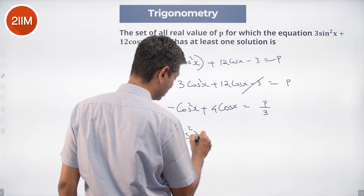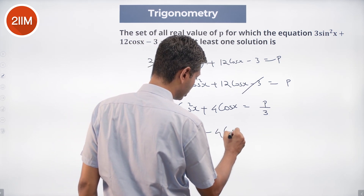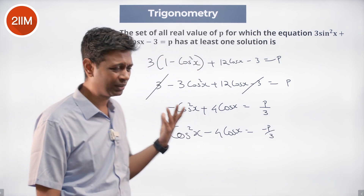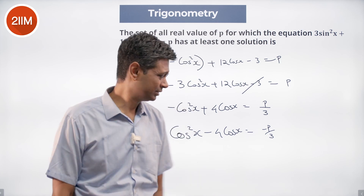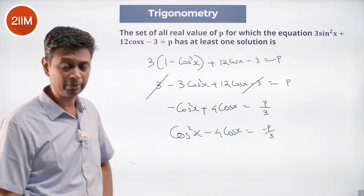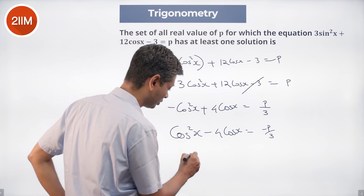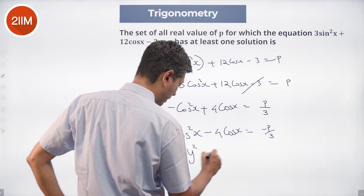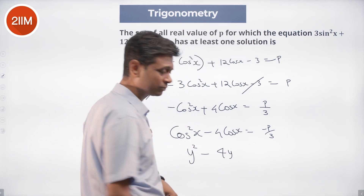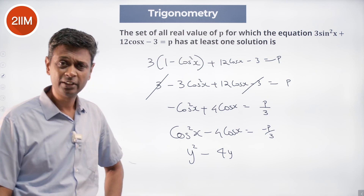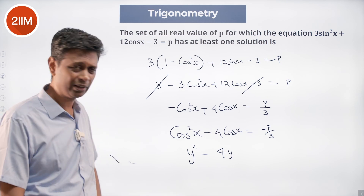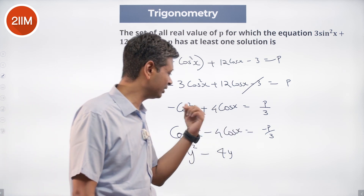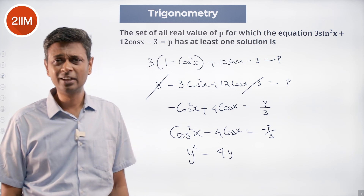Multiplying by -1 gives cos²x - 4cosx = -p/3. I substitute y = cosx, so this becomes y² - 4y = -p/3. I like the idea of completing the square — I could bring p/3 to this side and use the discriminant ≥ 0, but I want to do it slightly differently.